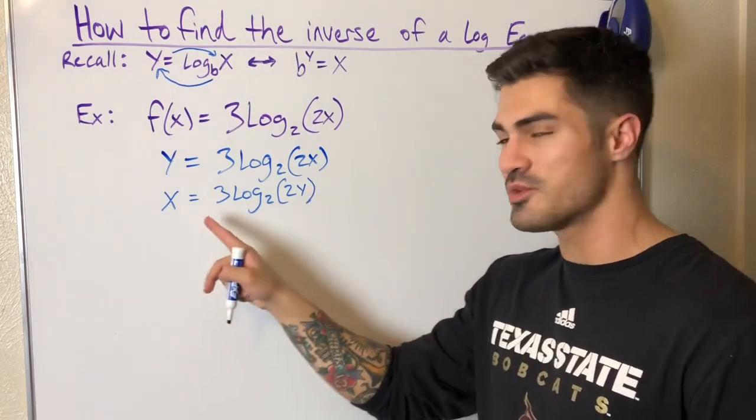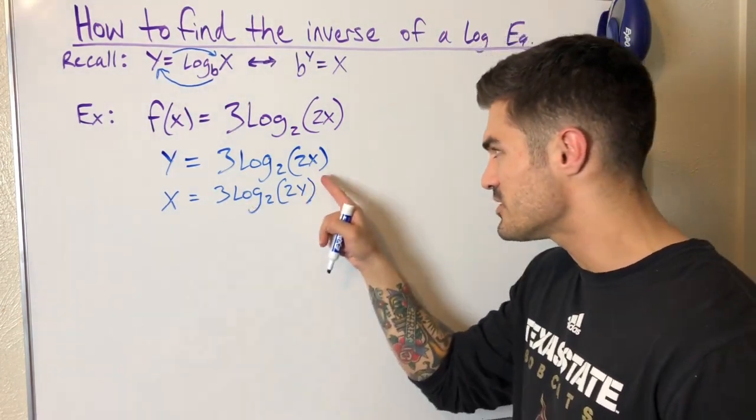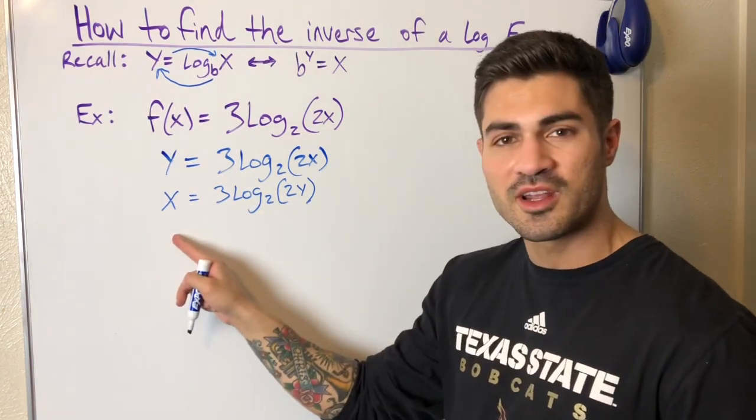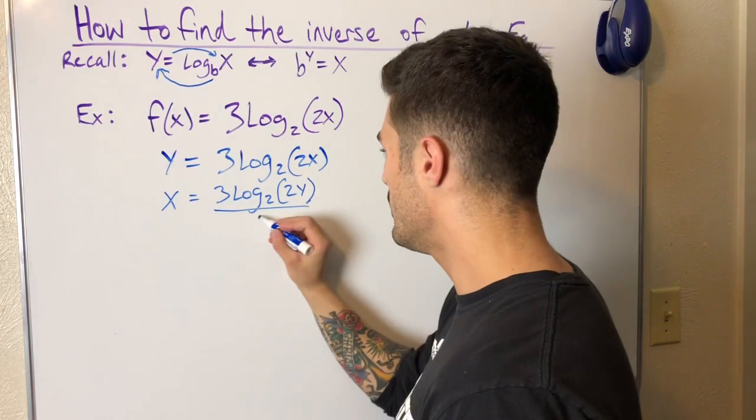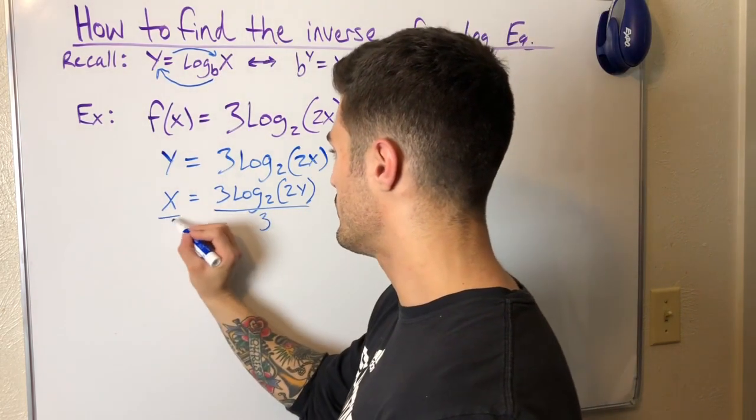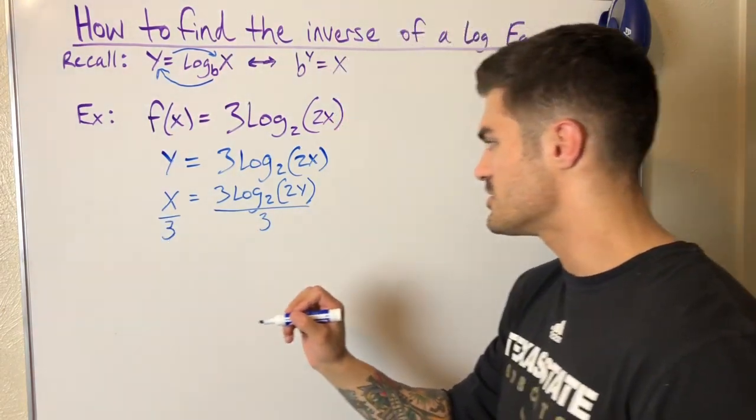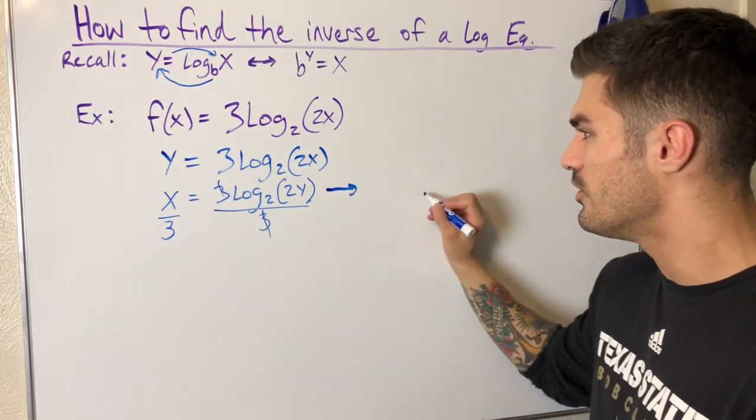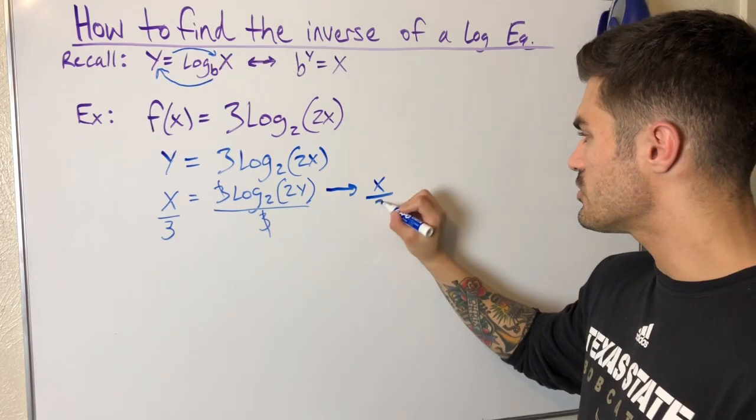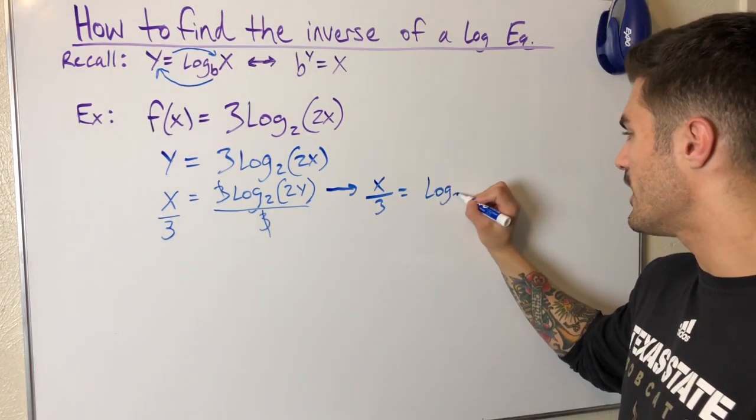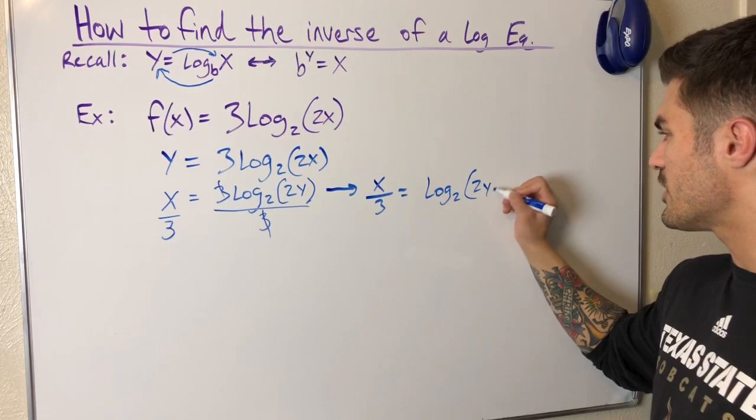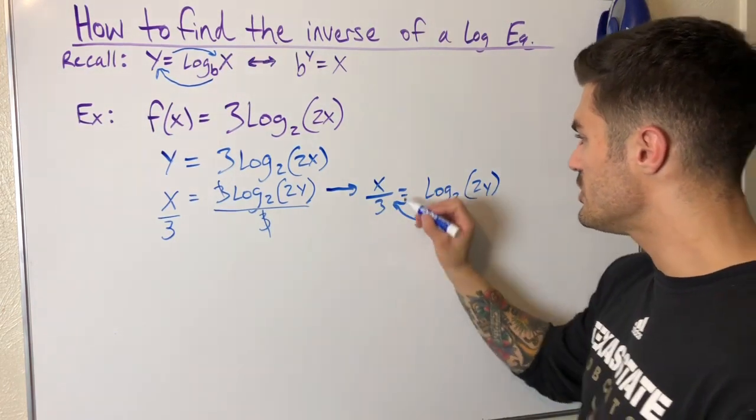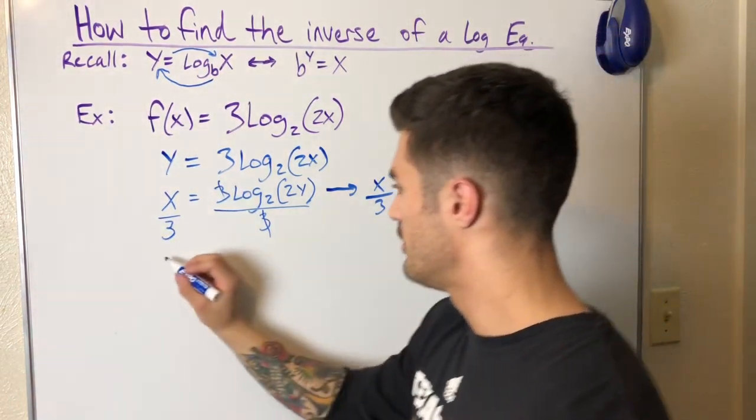Either way you'll get the same inverse equation. These 3s will cancel. Now I have x over 3. What do I have now? x over 3 equals log base 2 of 2y. Now I can do my little trick and rewrite this in exponential form. I have 2 to the x over 3 equals 2y.